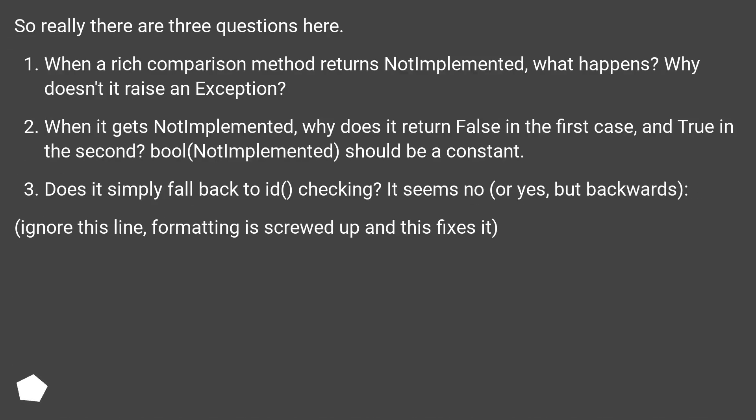So really there are three questions here. When a rich comparison method returns NotImplemented, what happens? Why doesn't it raise an exception? When it gets NotImplemented, why does it return false in the first case and true in the second? Bool of NotImplemented should be a constant. Does it simply fall back to ID checking? It seems no or yes, but backwards.